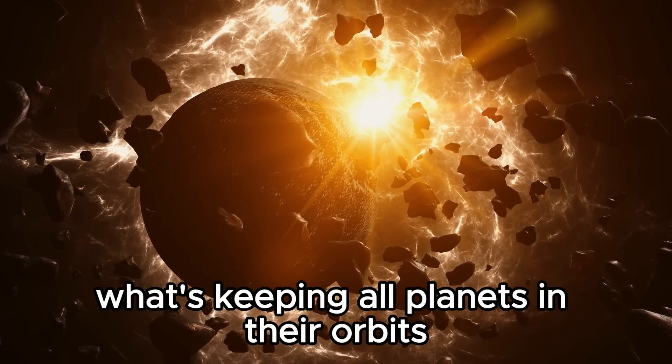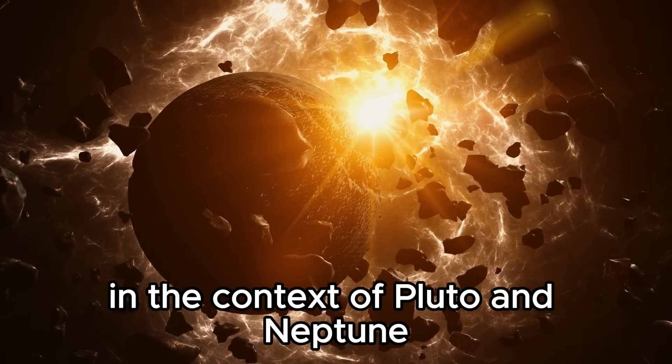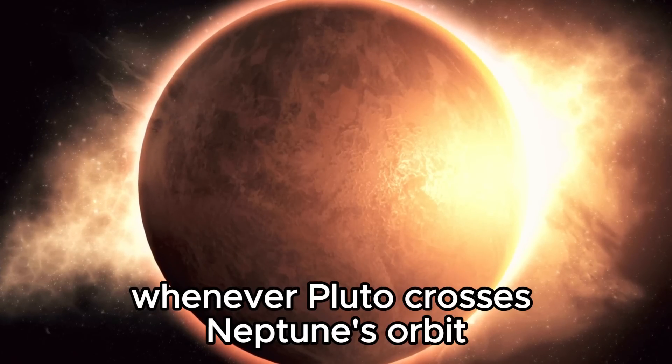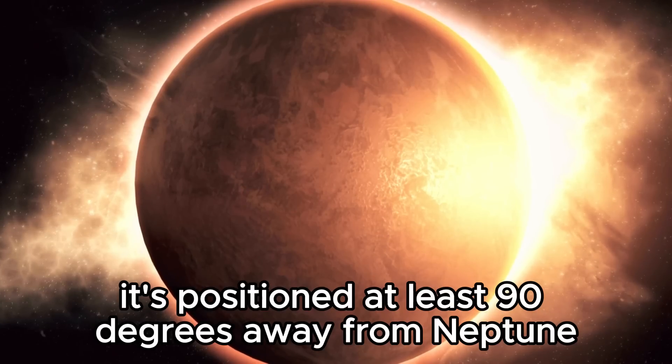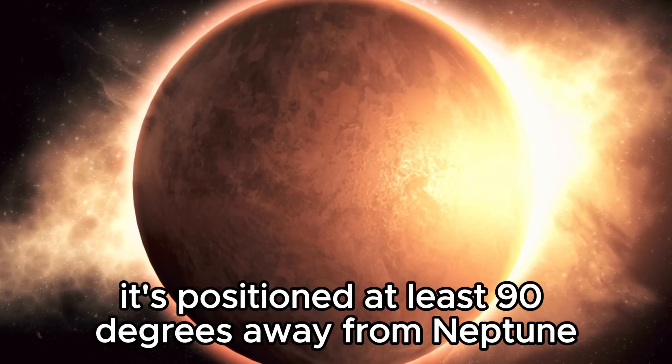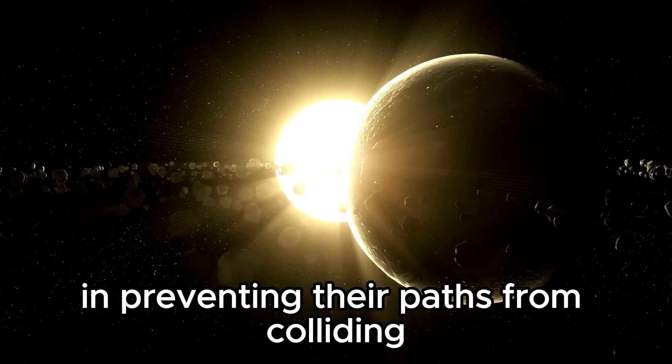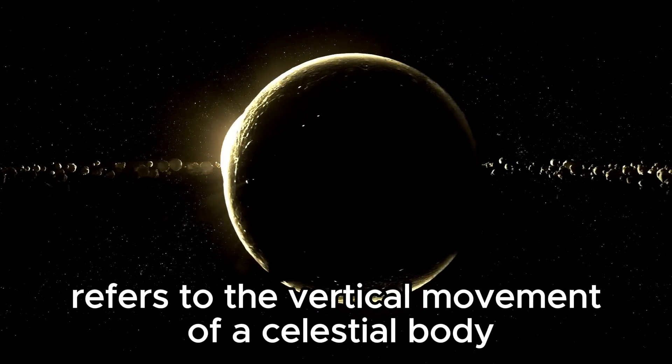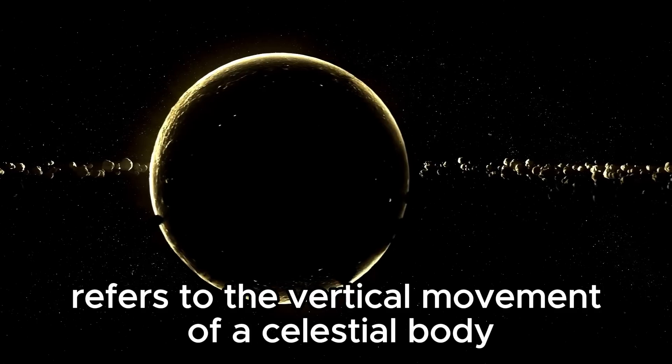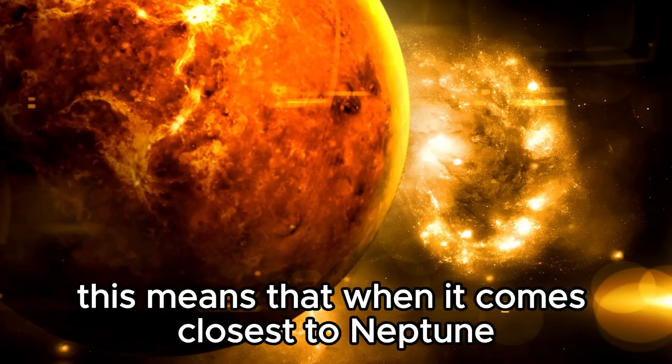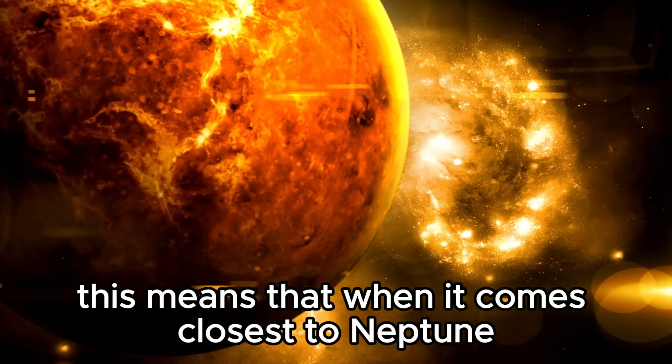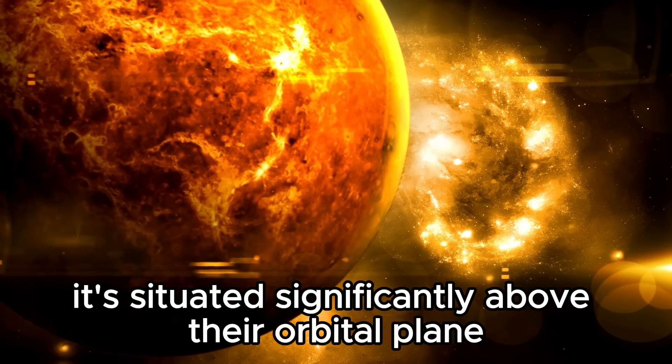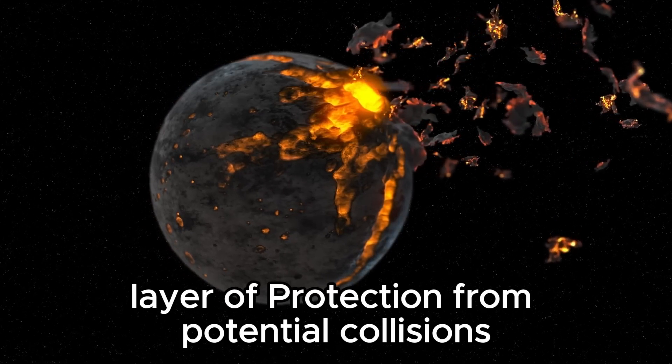According to astrophysicists, what's keeping all planets in their orbits is a phenomenon called libration. In the context of Pluto and Neptune, this term means that whenever Pluto crosses Neptune's orbit, it's positioned at least 90 degrees away from Neptune. This spatial separation is crucial in preventing their paths from colliding. Latitude libration refers to the vertical movement of a celestial body in its orbit. For Pluto, this means that when it comes closest to Neptune, it's situated significantly above their orbital plane, providing an additional layer of protection from potential collisions.